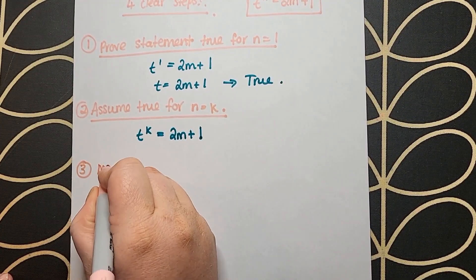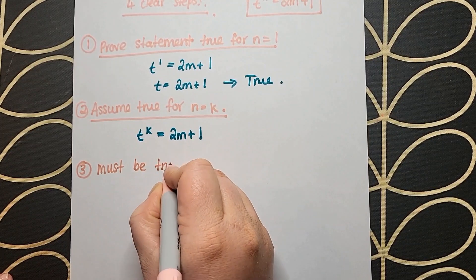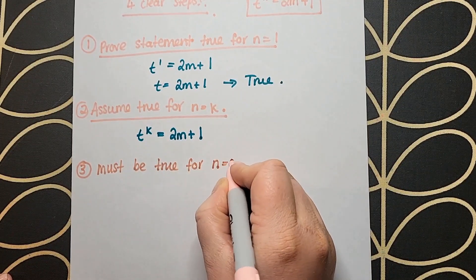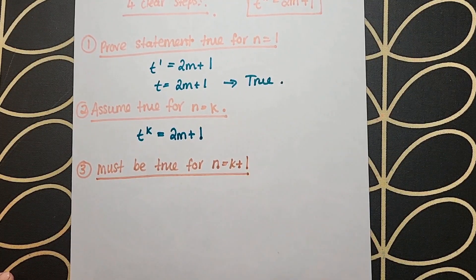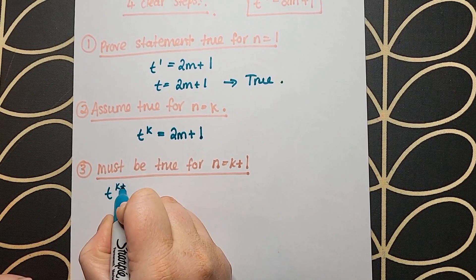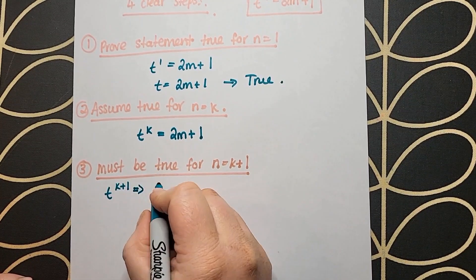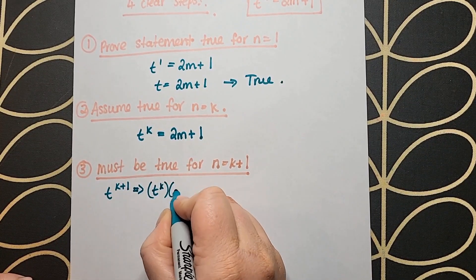Moving on to step 2, we assume that it is true for n equals k. So I take my k value and substitute it in for n, and I get t to the power of k equals 2m plus 1.